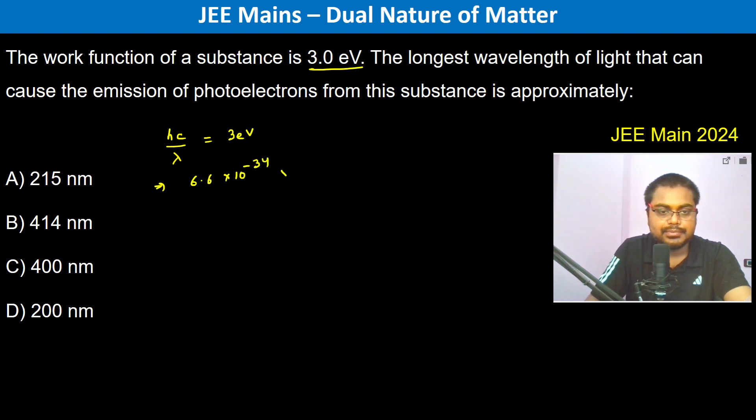the power minus 34 into 3 into 10 to the power 8. All things are in standard units, so there is equal to 3 into 1.6 into 10 to the power minus 19 coulomb into volts. This is lambda, therefore lambda